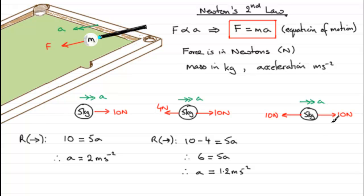Well, if we resolve to the right, apply that equation of motion, what we've got here is a force of 10 newtons to the right minus 10 newtons to the left, a resultant of zero newtons.